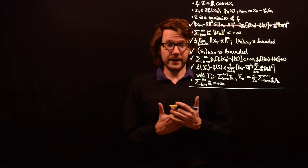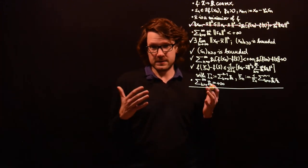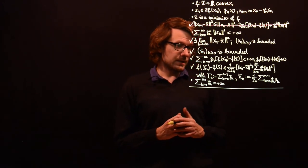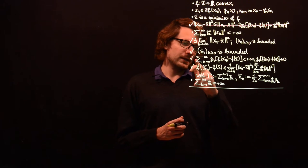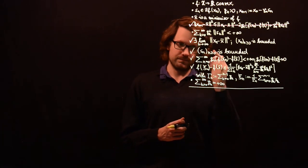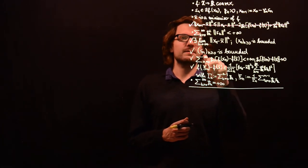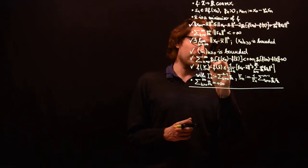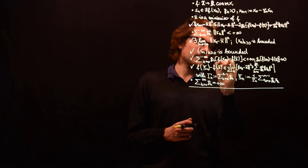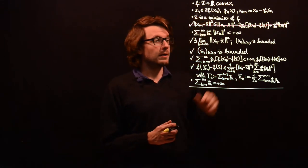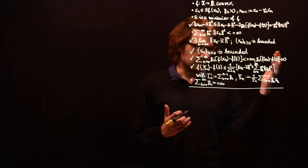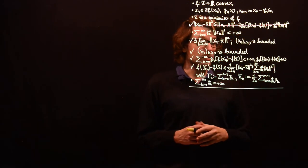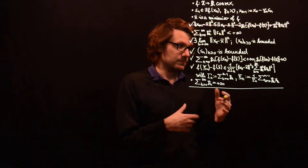In the last video, we were able to add a few things to our list of achievements and assumptions. First, we had the summability of some coefficient — the step size times the gap between the function value at the iterate xn and the optimal function value — and this sum is finite. In particular, the summands also go to zero, but this is a weaker property.